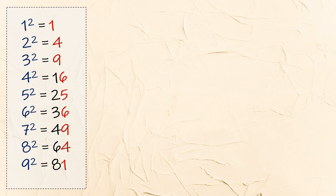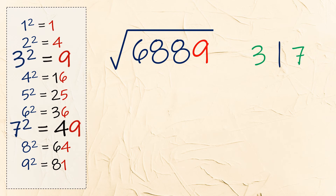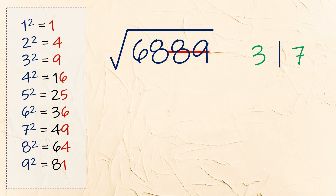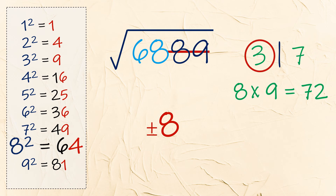Try this one: the square root of 6889. Last digit is 9, so we have 3 and 7. Cross out the last two digits — we get 68. In the list, 64 is closest to it, so our first digit is 8. 8 times 9 gives 72. Since 68 is less than 72, we use 3. Our answer is positive and negative 83.